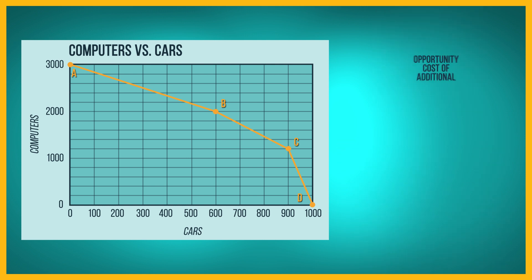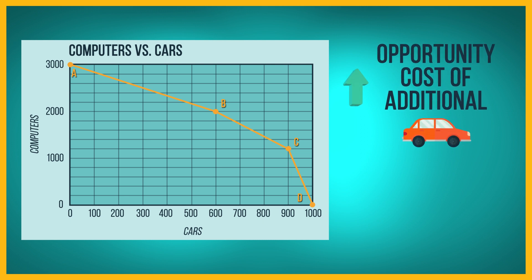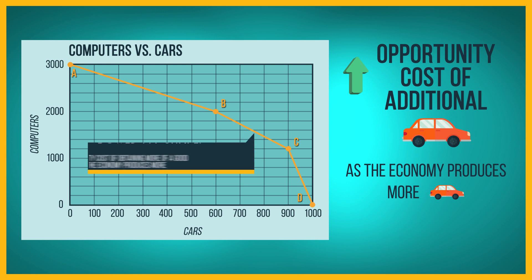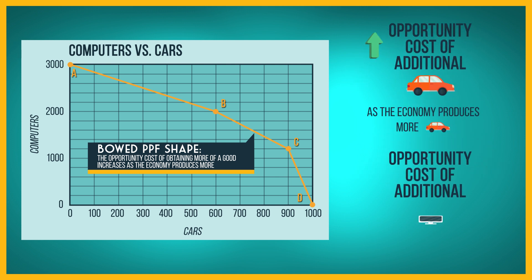Notice that the opportunity cost of an additional car increases as the economy produces more and more cars. Whenever the production possibility frontier is bowed and not straight, the opportunity cost of obtaining more of a good increases as the economy produces more of the good. The opportunity cost of another computer increases as we produce more and more computers, because some resources are better suited for making computers and other resources are better suited for making cars.